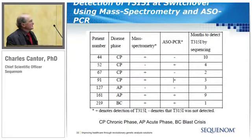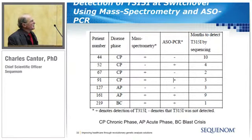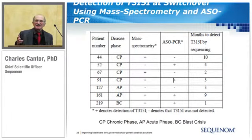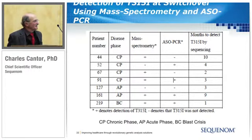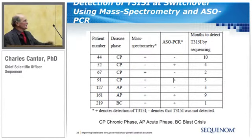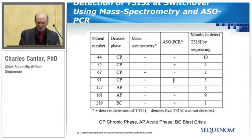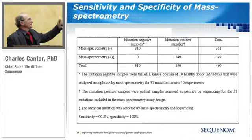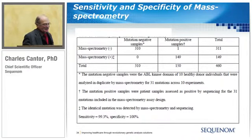For some of the positive mutations, they could confirm results in singleplex with allele-specific PCR, and they would eventually see the mutation by sequencing. But for some of these patients it took up to 10 months before they could see the mutation by conventional sequencing — and if these drugs cost $5,000 a month, that's an awful lot of wasted healthcare before you figure out which drug to use. When you finally see the results by both sequencing and mass spectrometry, the concordance is nearly perfect: one discordant sample in 300.